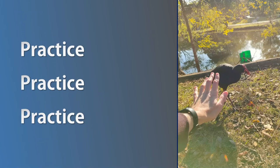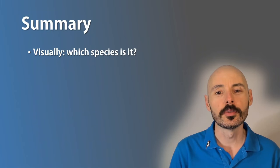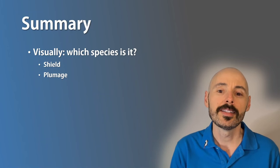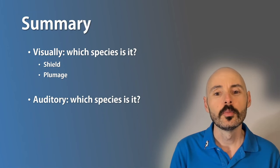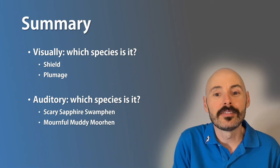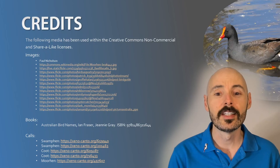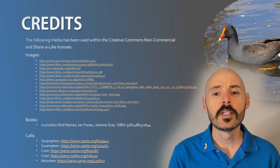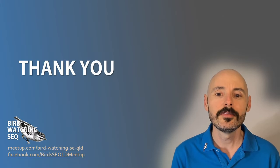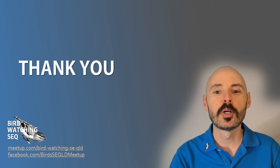Let's summarize. For visual ID, first look at the shield, then look at the plumage — is it blue like a sapphire, or muddy, or black? To ID by call, remember those behaviors: is the call aggressive and scary, mournful, or gravelly? Next time you're in the field, try to guess which one's calling to reinforce what you've learned. If you'd like more identification and birdwatching videos, please subscribe and leave questions or feedback in the comments. And if you live in or are visiting Southeast Queensland, join us for our free monthly bird walks — find out more on Facebook and meetup.com.